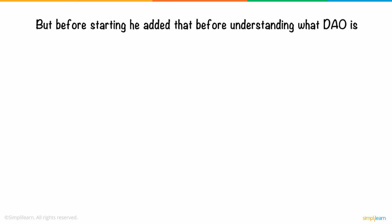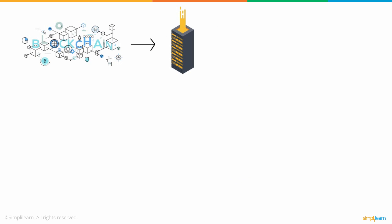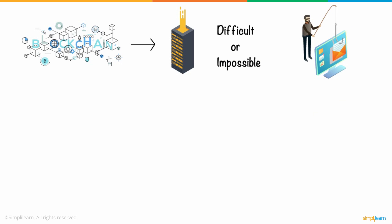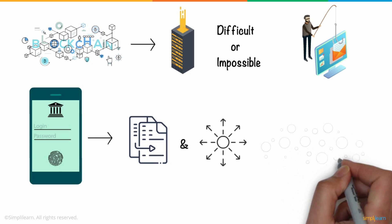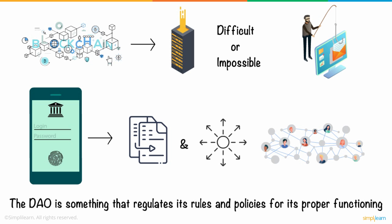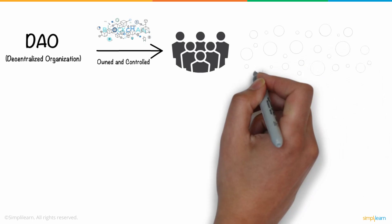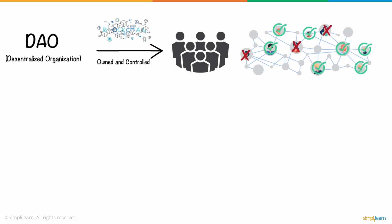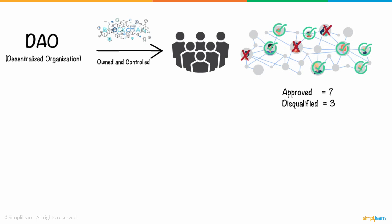Sam explained that before understanding what DAO is, let's understand a bit about what blockchain is. Blockchain is a system of storing data that makes it difficult or impossible to change, hack, or manipulate the data. It's basically a digital log of transactions that are duplicated and spread across the blockchain's whole network of computers. The DAO makes use of its rules and policies for its proper functioning.